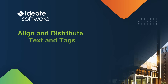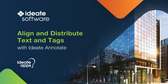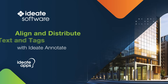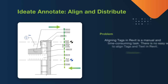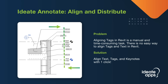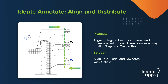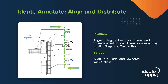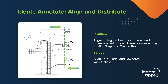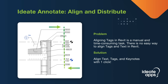Welcome to Align and Distribute Text and Tags with IDEA Annotate. Ensuring your drawing documentation is clear and legible is important in avoiding potential liability issues, reword and republishing of documentation. Aligning text and tags in Revit can be a time consuming and laborious process.